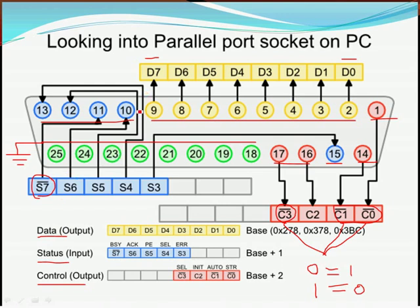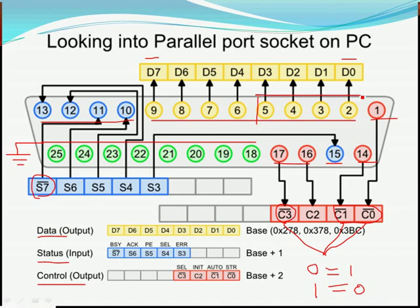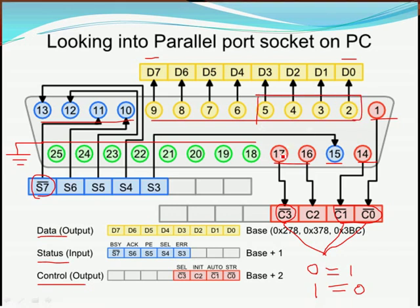There are only 5 status pins and 8 data pins. You will ask why there aren't 8 pins for status. Because in early days the printer used only 5 status pins and 4 data pins to communicate.